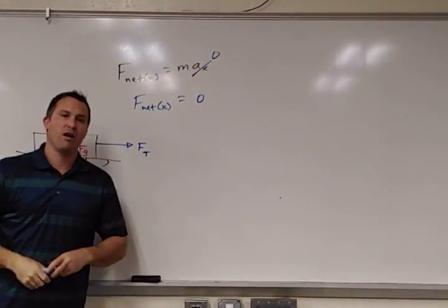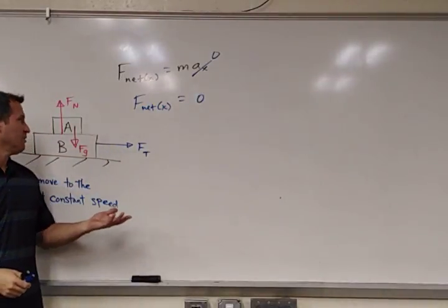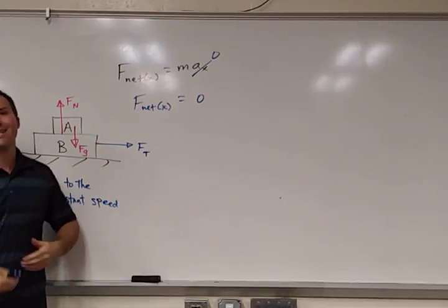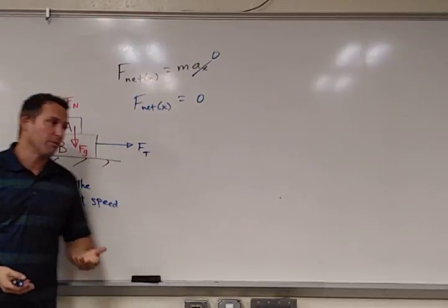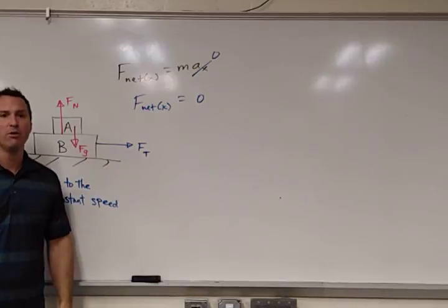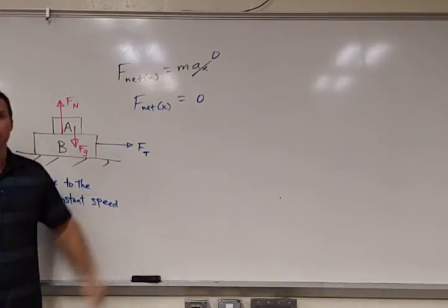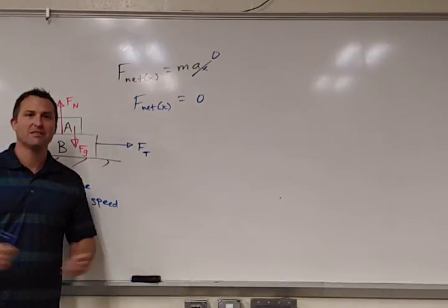Now, we saw that the only possible horizontal force that block A can have, the only possibility, is from block B down below. And, well, it's zero. That's it.